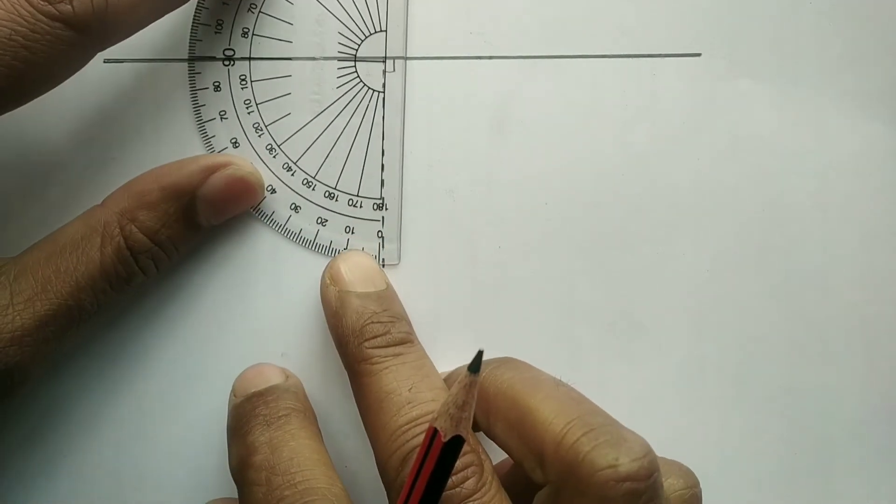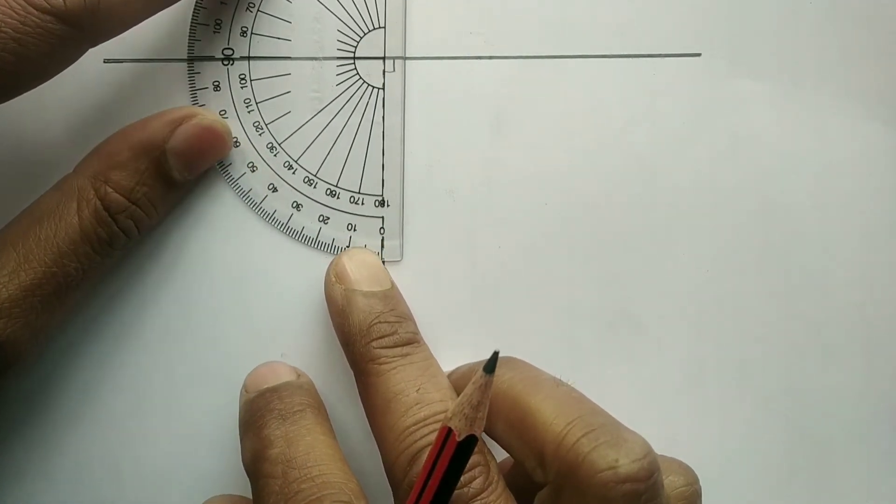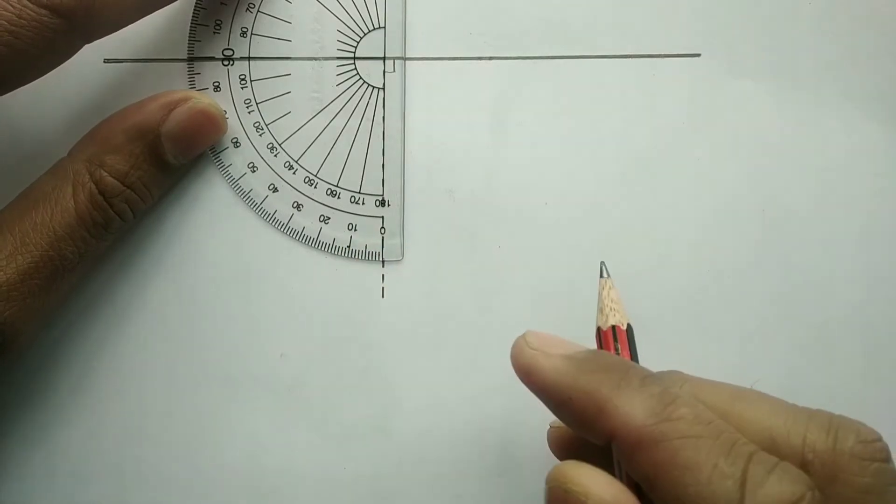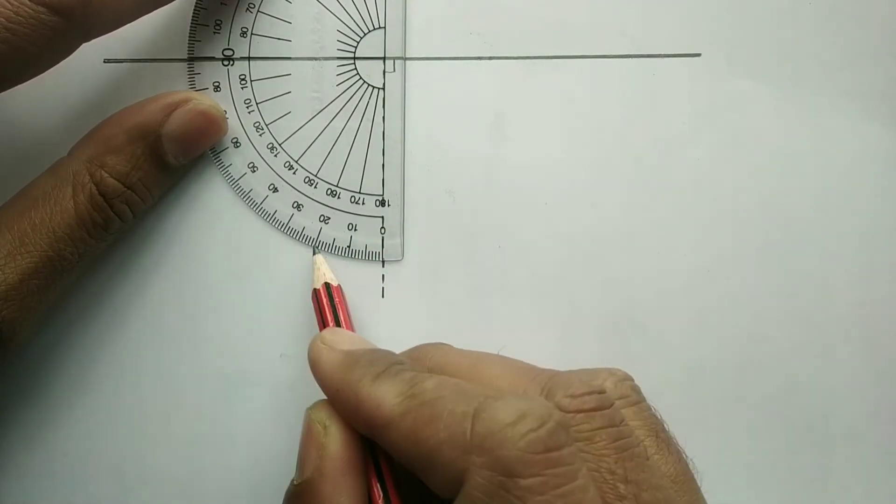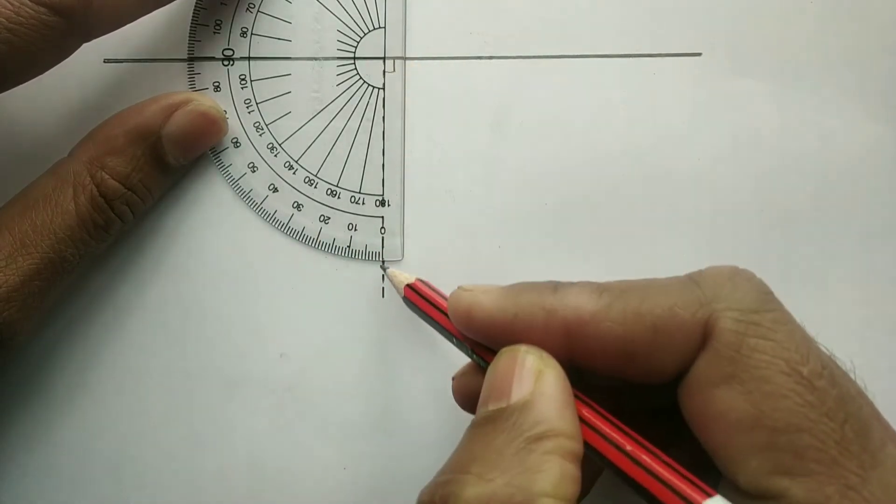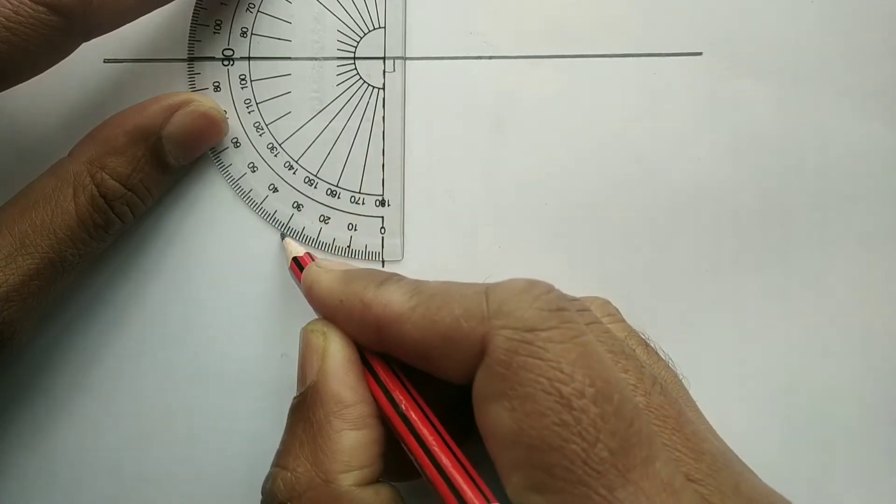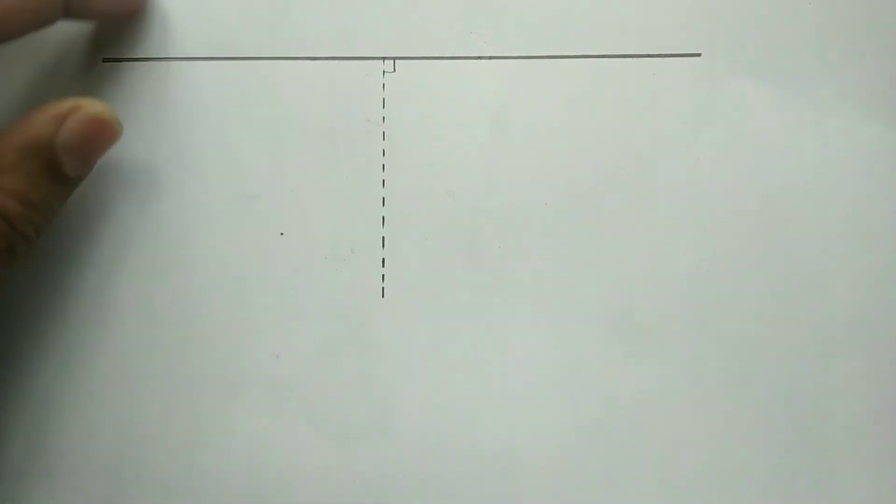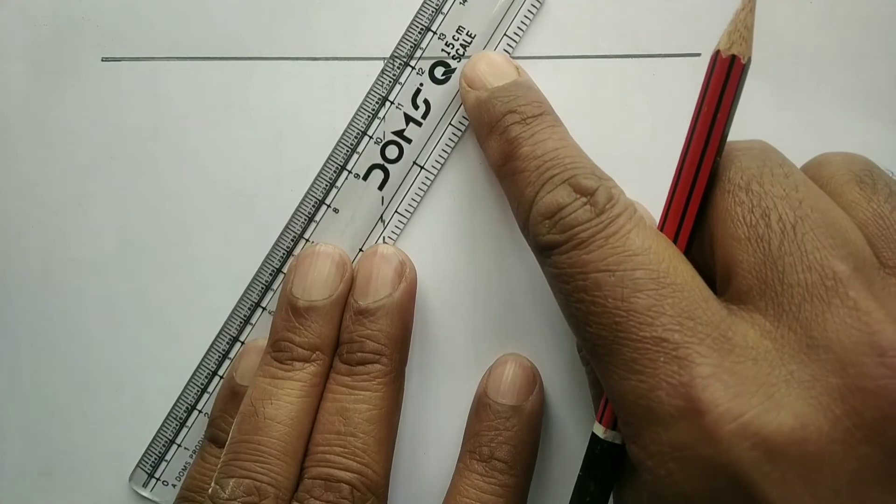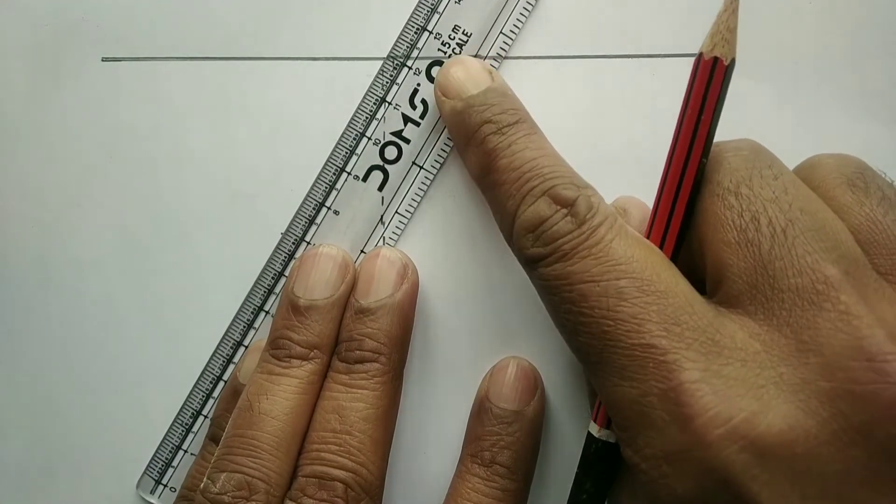Now, we need to represent the incident ray and let us consider the angle of incidence to be 30 degrees. So, this is 10, 20, 30 and angle of incidence is to be measured with respect to the normal. So, now let's join this. So, this will represent the incident ray.